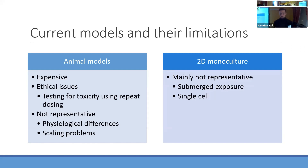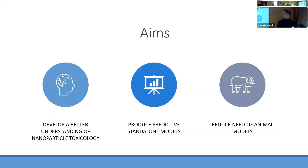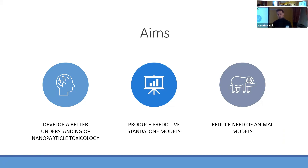One of the alternatives to this sort of testing is using monoculture, so cell culture. But again, they're not very representative because of the submerged conditions, which is an air-liquid interface, and they're usually a single cell-based model. So my aims are specifically to develop a better understanding of nanoparticle toxicology, with the aim of producing a predictive standalone in vitro model, hopefully reducing the amount of animal models required for this sort of testing.